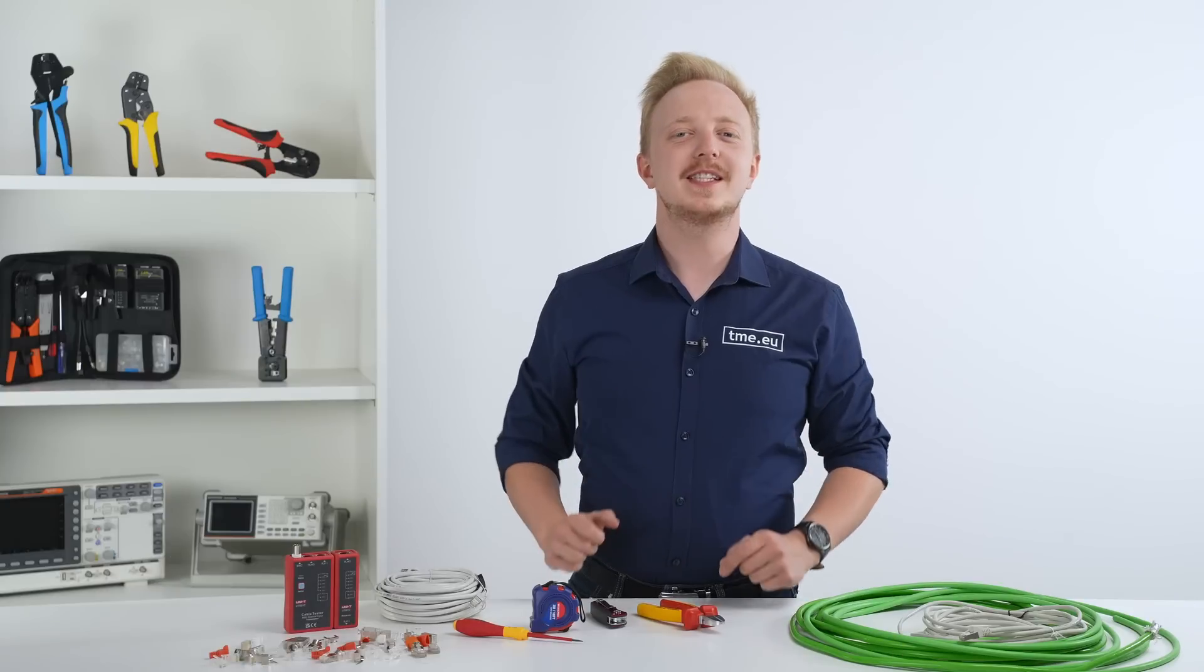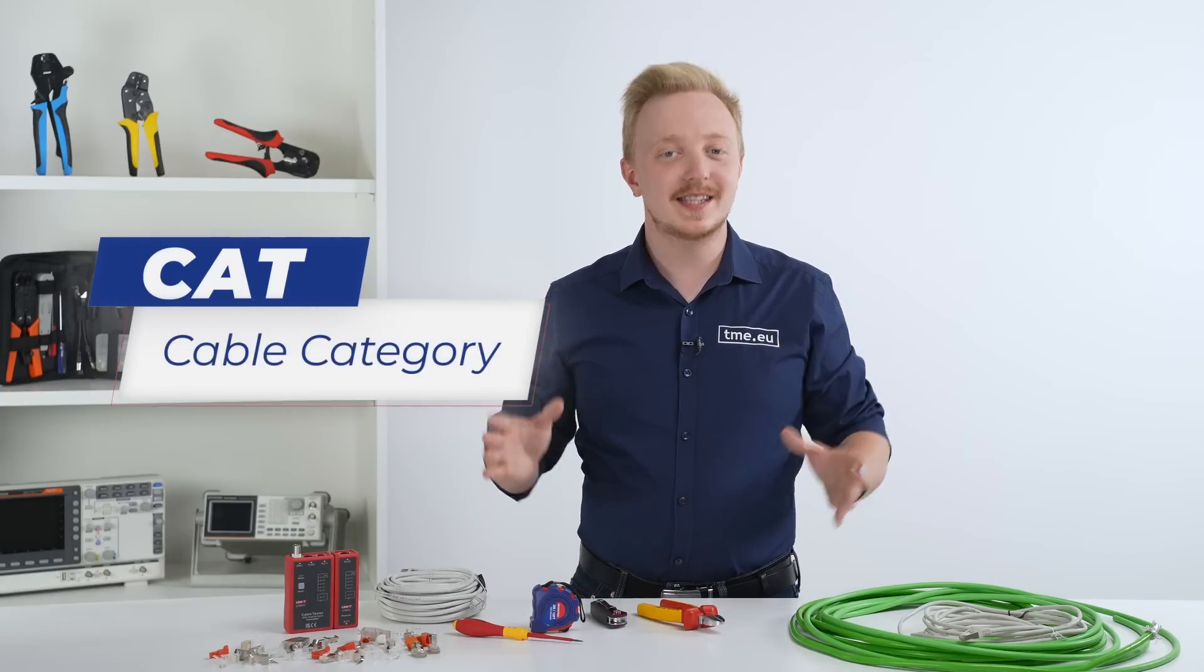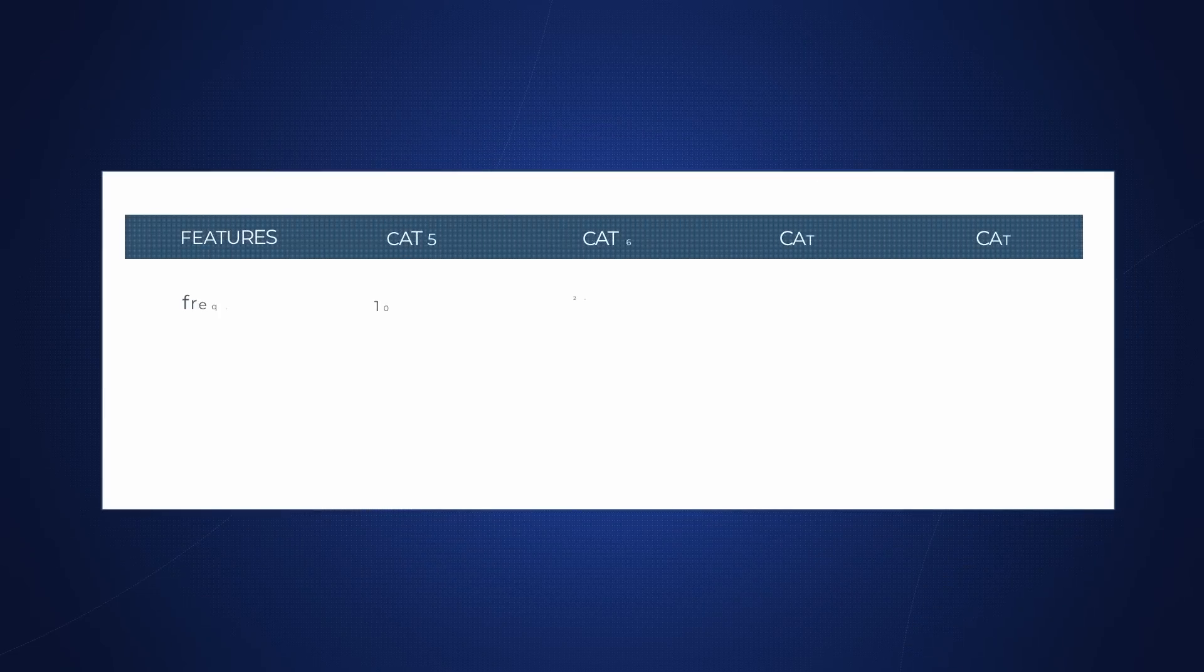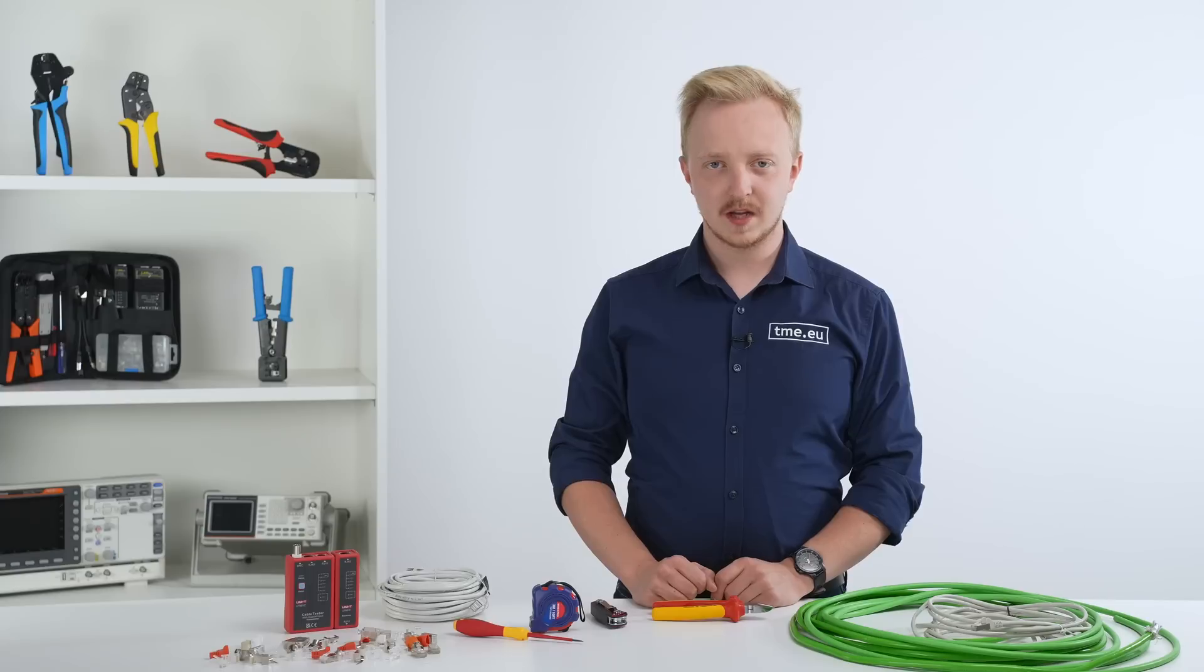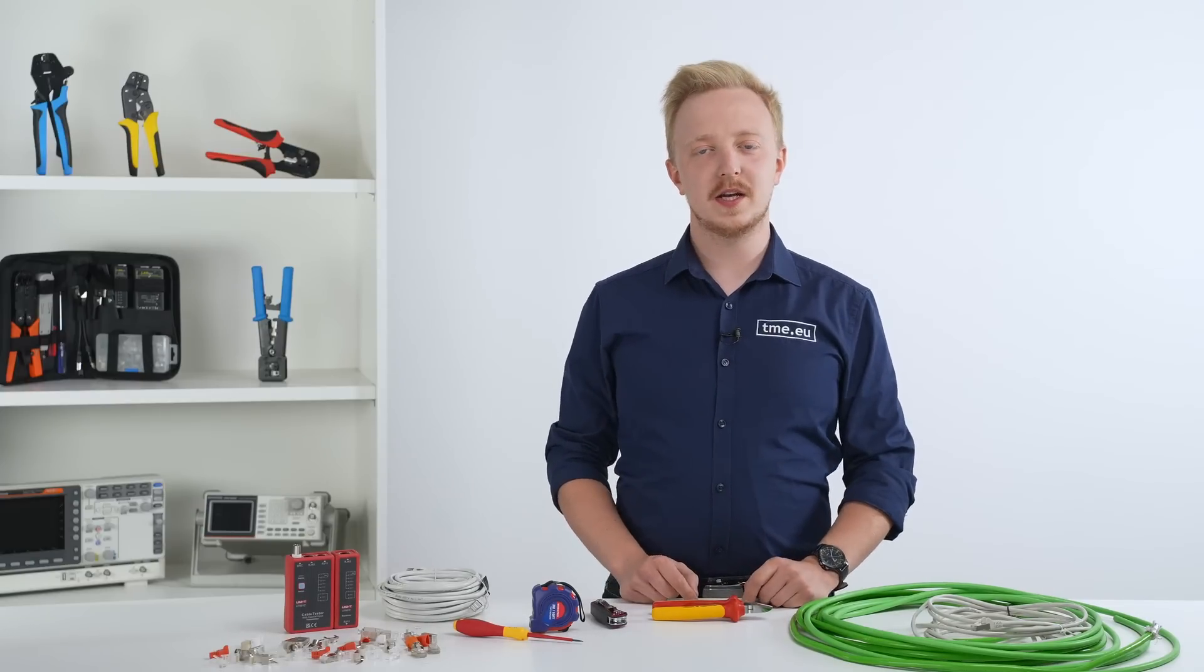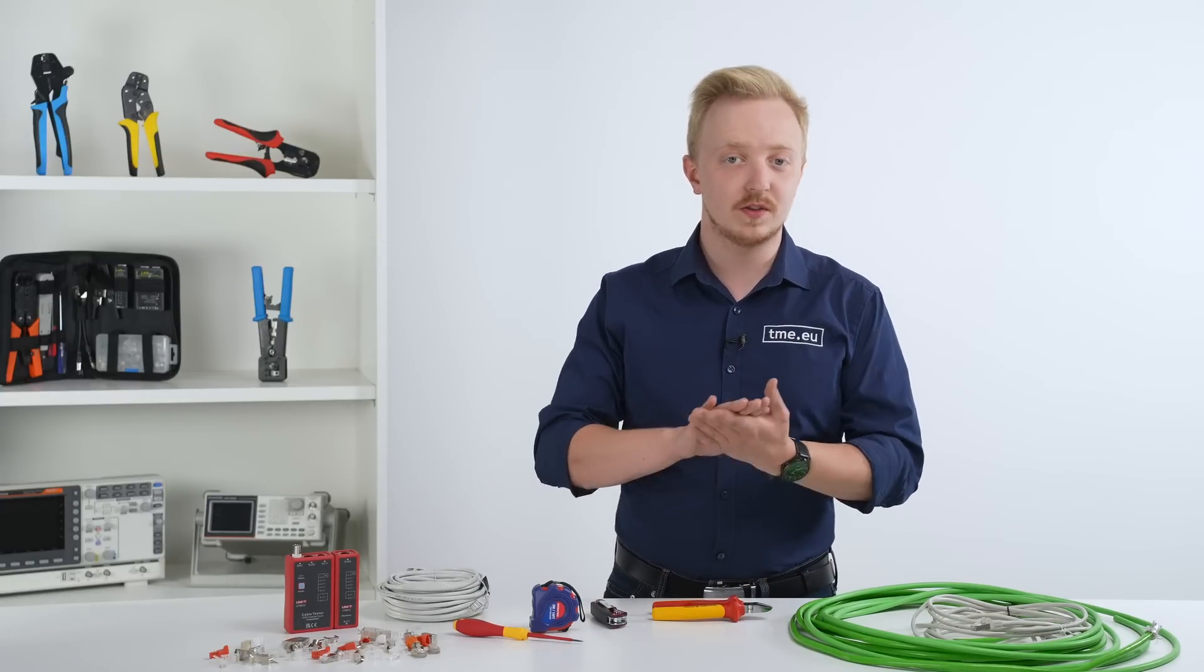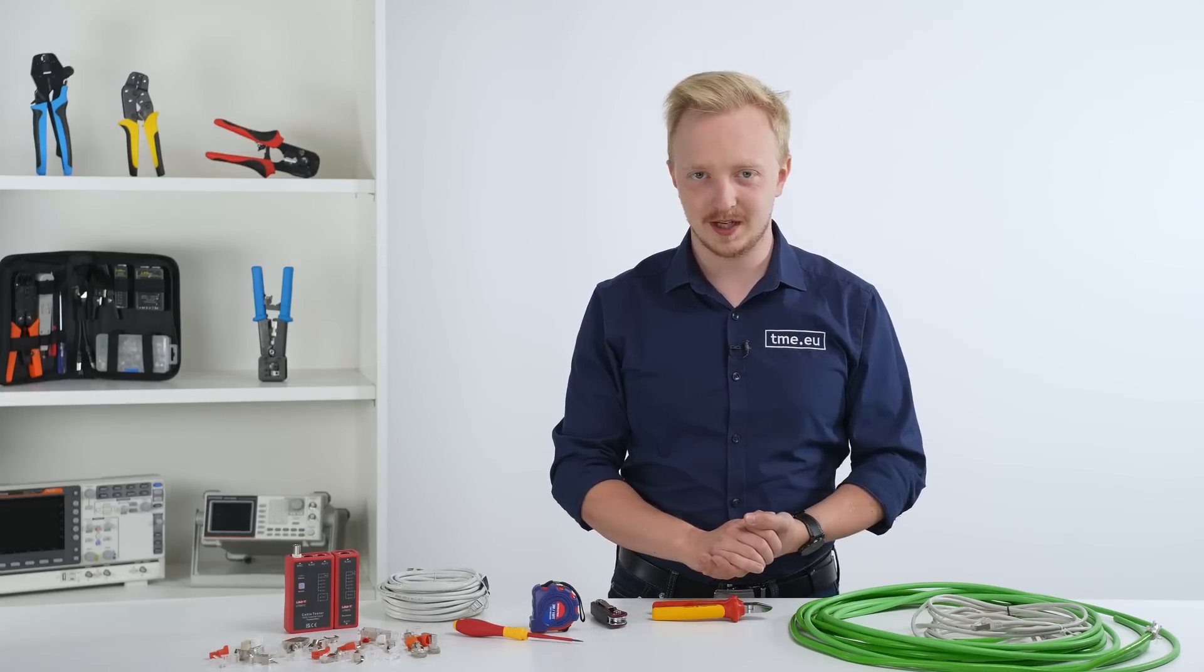The first step is to decide what cable category you should use. Each succeeding category offers better performance in terms of speed, bandwidth and reduced interference. The most common are CAT 5e, 6, 6a and 7. You should check with your internet provider the maximum data rate that you can have and get the appropriate one.